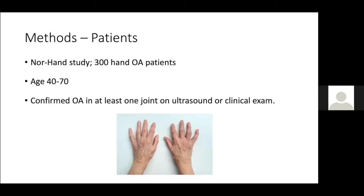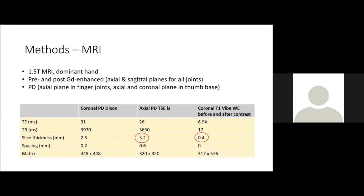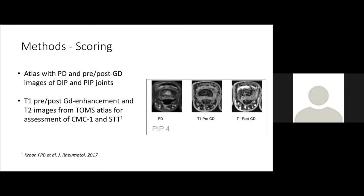We included participants from the NOR-HAND study, a hand-OA cohort with 300 patients aged 40 to 70 with confirmed hand-OA in at least one joint on ultrasound or clinical examination. They performed MRI of the dominant hand after IV administration of gadolinium contrast, and a T1-weighted volumetric interpolated breath-hold examination was reconstructed into sagittal and axial planes with 0.4 mm thickness. For proton density-weighted images, we only assessed axial images with 2.5 mm thickness in the finger joints, while both axial and coronal images were assessed in the thumb base. We prepared an atlas with examples of synovitis grade 0 to 3 in DIP and PIP joints in gadolinium-enhanced MRI and proton density-weighted MRI.